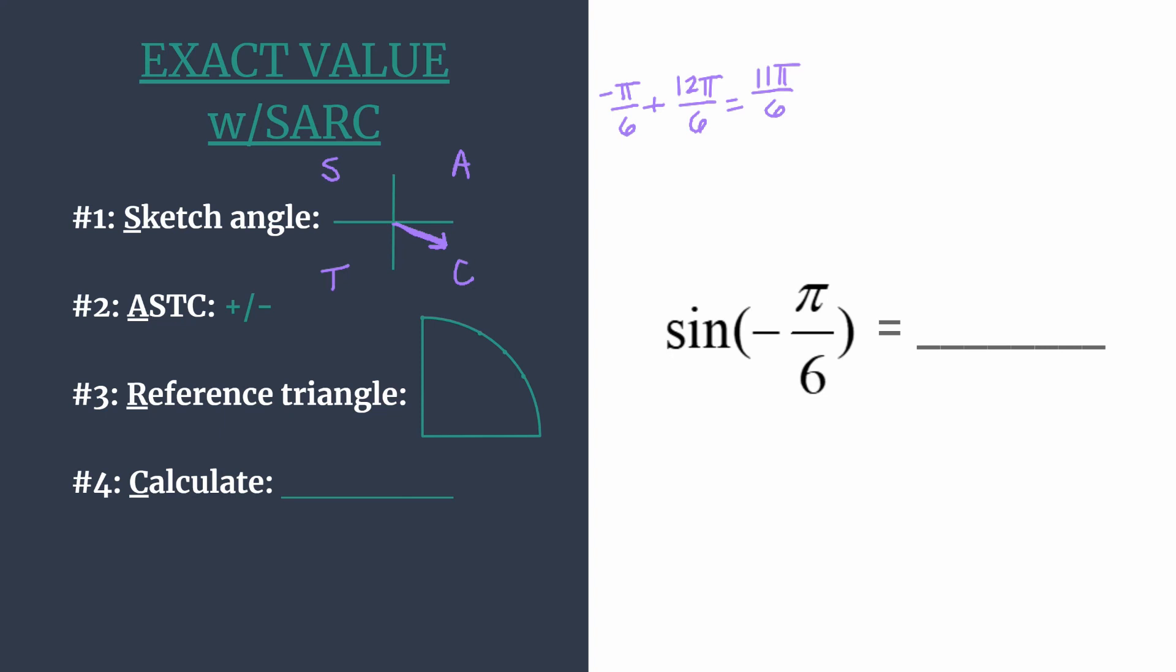We're trying to find the sine and so we know that our exact value should be negative in the fourth quadrant because sine is negative in the fourth quadrant. Alright, let's go ahead and mark that for our final answer, we'll have a negative here.